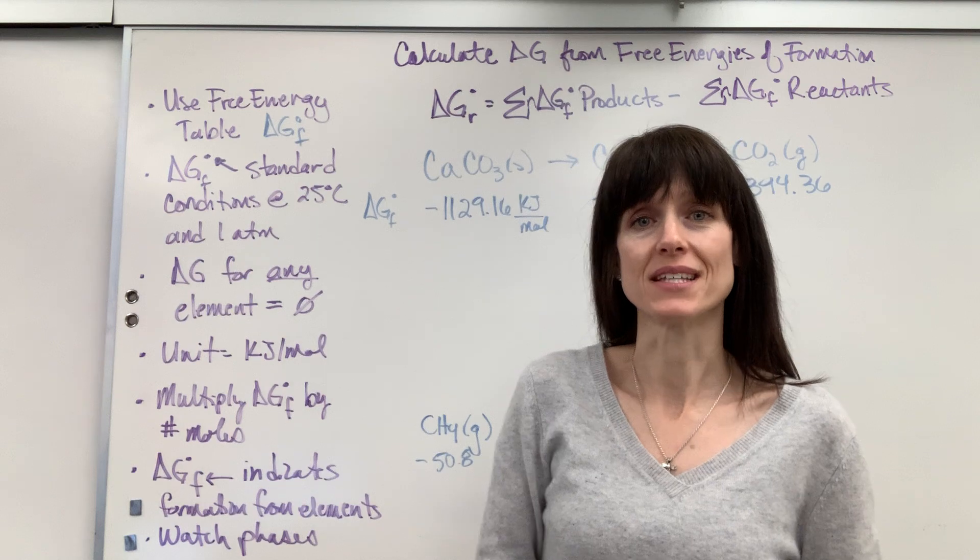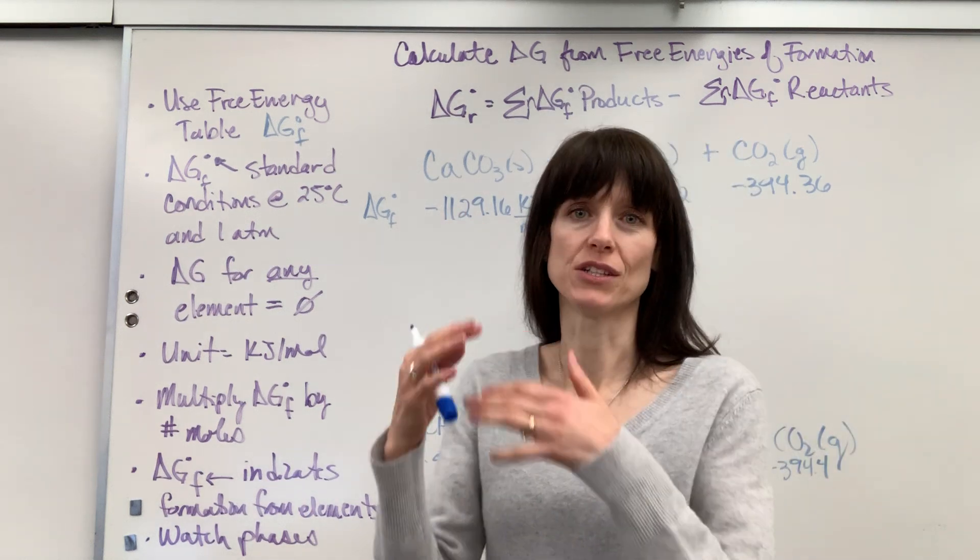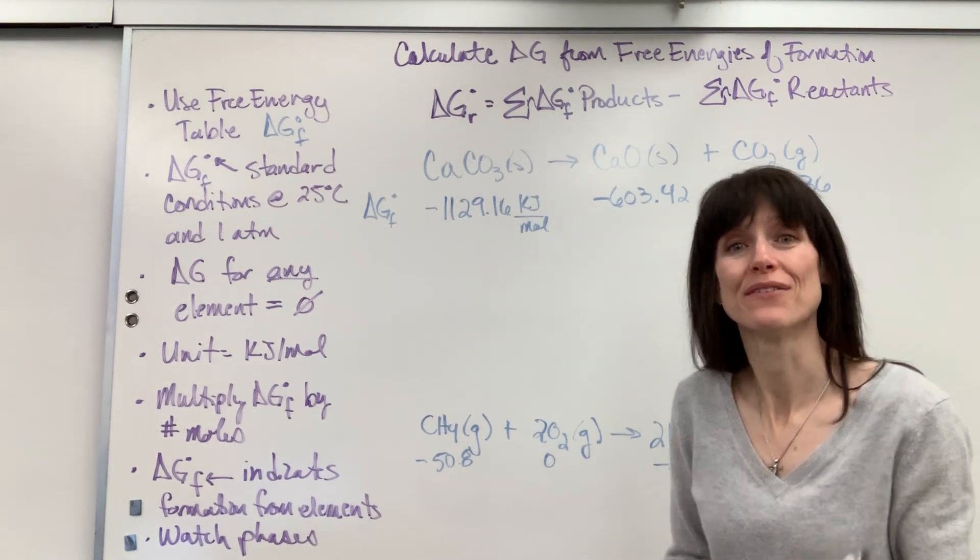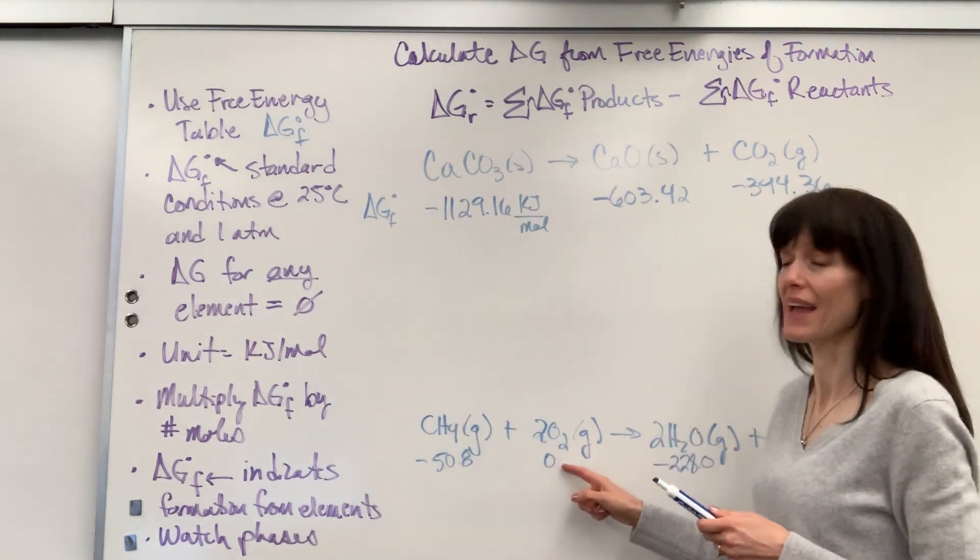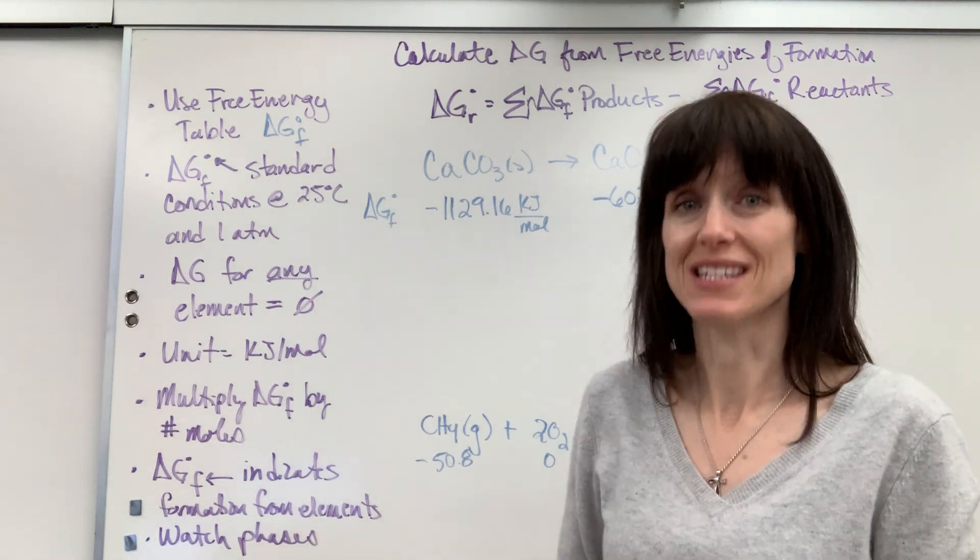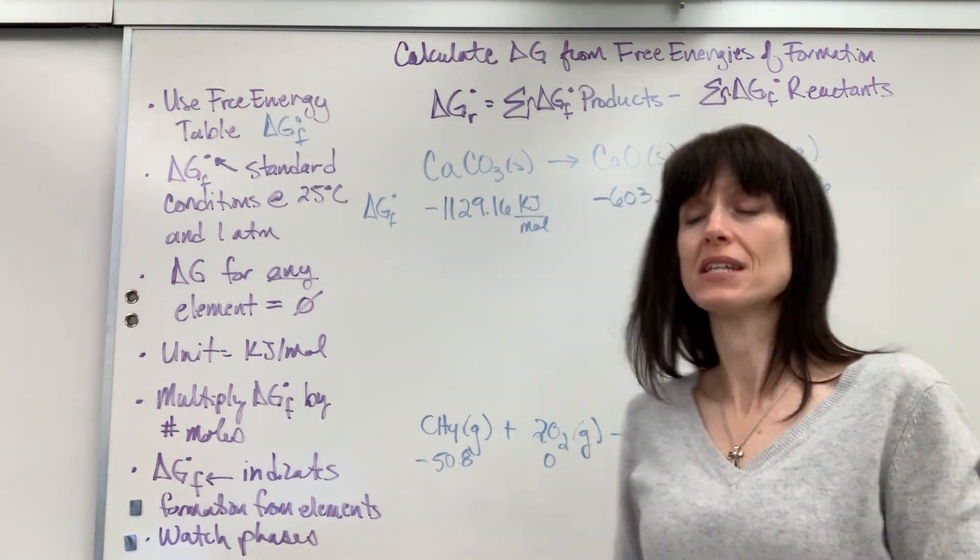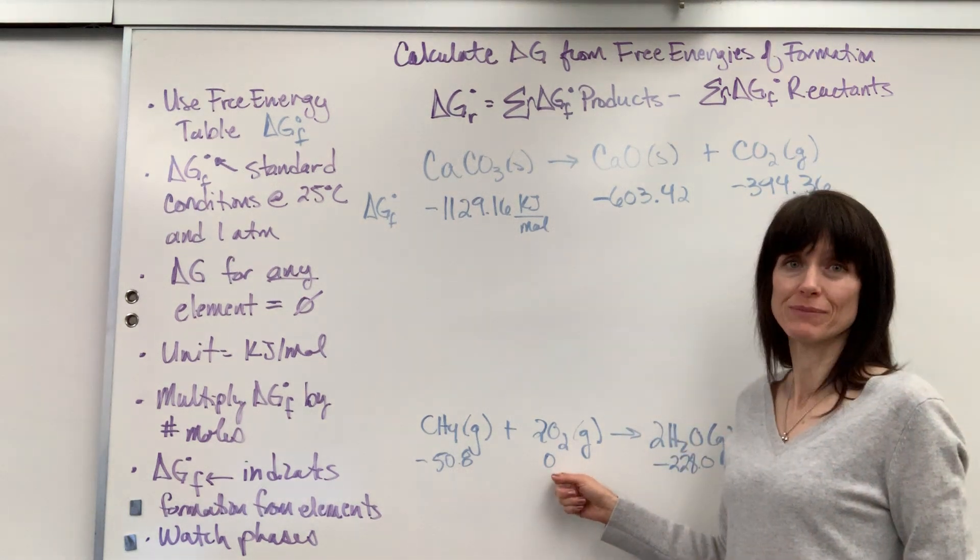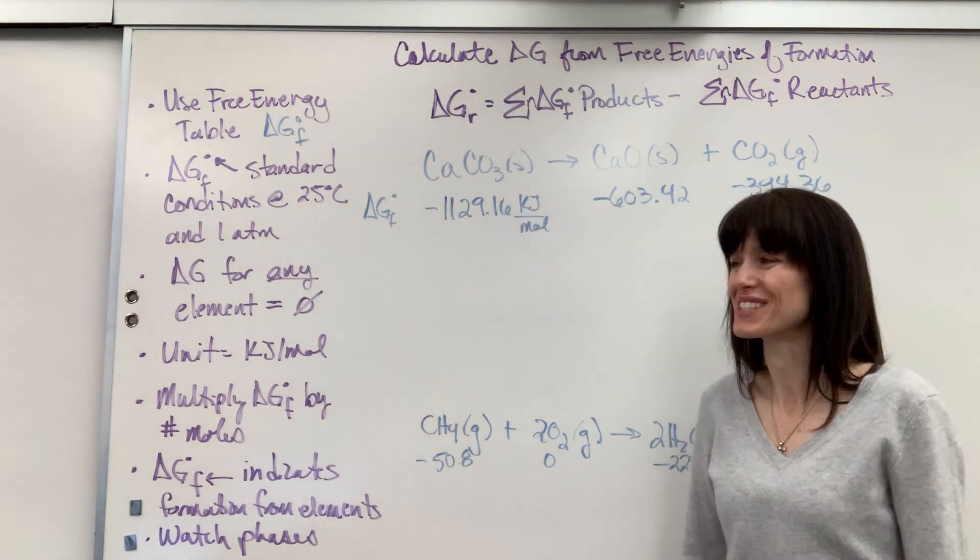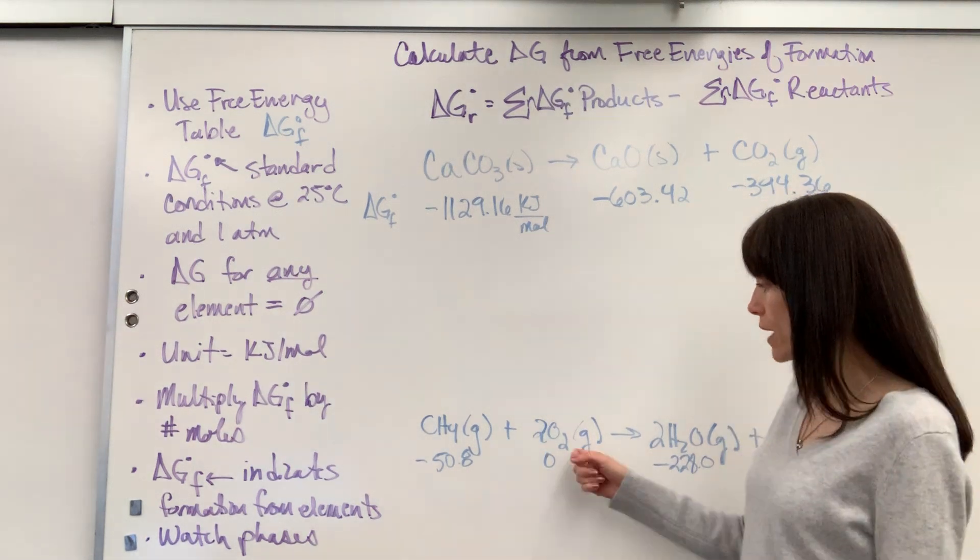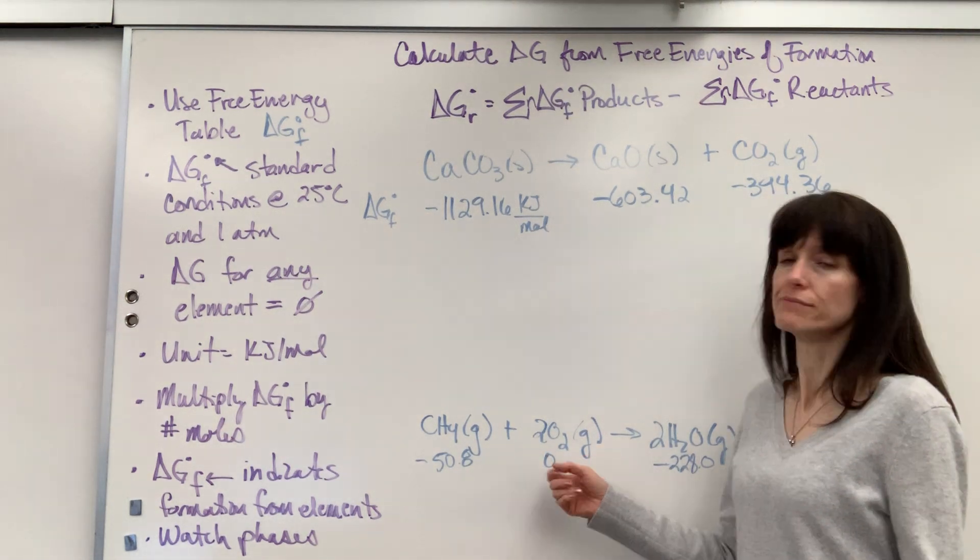So delta G for any element is zero. Now this is how you'll see it on a test. You'll be given all of these delta G values. You'll write your chemical equation, and they won't give you the delta G value for the elements because they expect you to know that it's zero. So have that memorized. Delta H and delta G for any element is always zero. Element in elemental form at 25 degrees C. So oxygen at 25 degrees C is a gas. It's going to be zero.